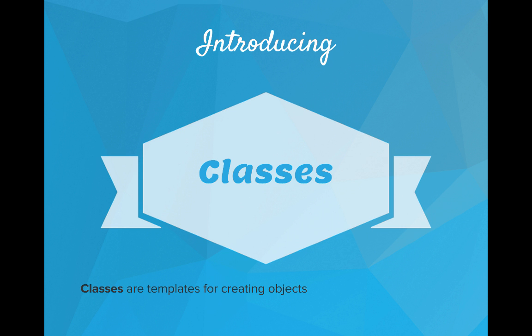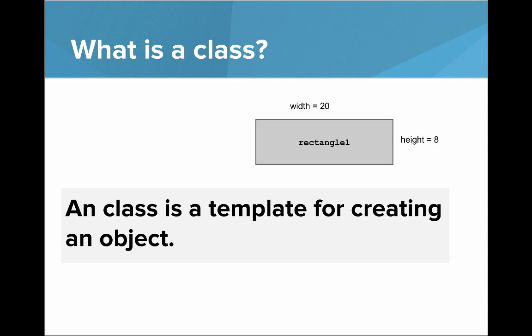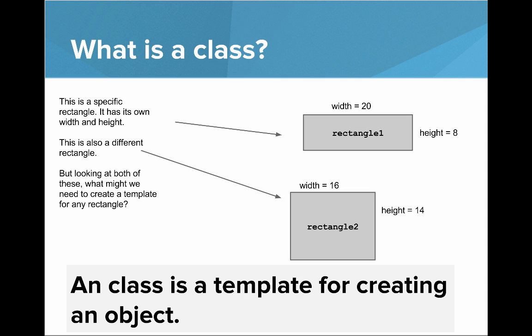And now it's time to introduce classes. Classes are templates for creating objects. So what's a class? A class is a template for creating an object. So let's take a look at this diagram again. Here, rectangle one, we have an arrow pointing to it. That's a specific object. It has its own width and its own height.